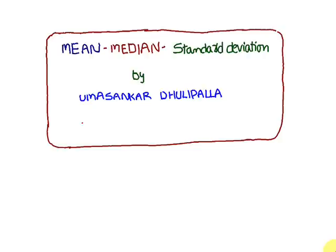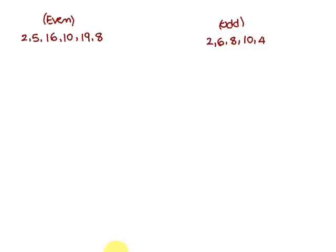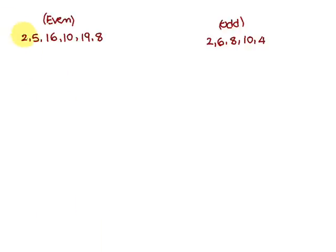Today we are going to discuss mean, median, and standard deviation. The first example: we are going to find out the mean of 2, 5, 16, 10, 19, and 8. We have six numbers here, and this is an even count of numbers.